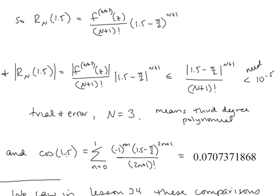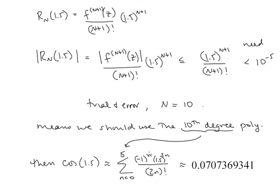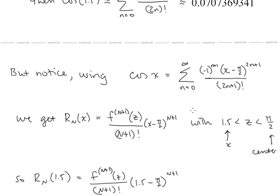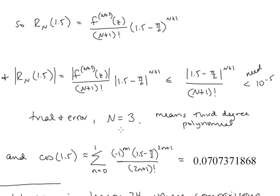Notice the difference: because we are evaluating at 1.5, which is very close to pi over 2, we needed a much lower degree polynomial. Our point was very close to the center of the series. With the first set of polynomials, the center was x equals 0, and 1.5 is quite far from 0, so we needed a 10th degree polynomial. In general, when using Taylor polynomials for approximations, we try to center our series near the values we need to evaluate so that we can use a lower order polynomial and make fewer computations.